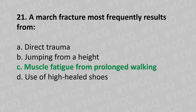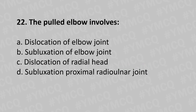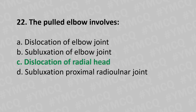Moving to our 22nd question: pulled elbow indicates — option A dislocation of the elbow joint, option B subluxation of the elbow joint, option C dislocation of the radial head, option D subluxation of the radial joint. And the answer is option C dislocation of the radial head.